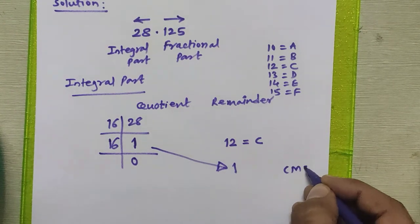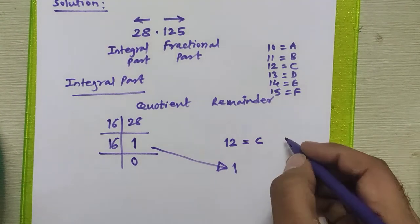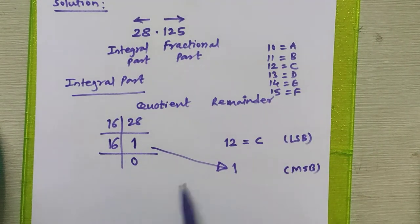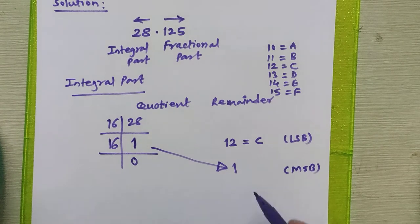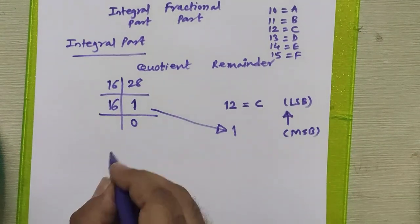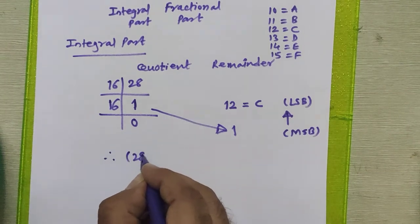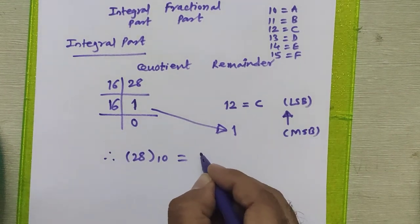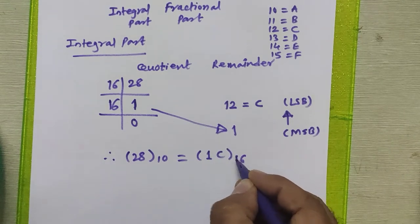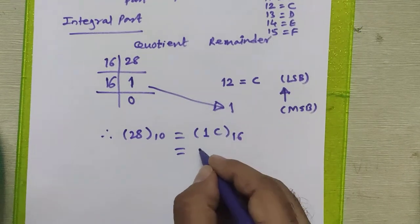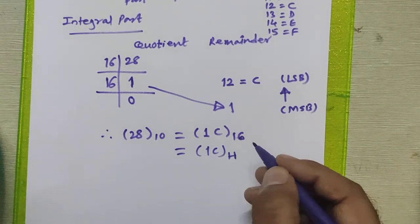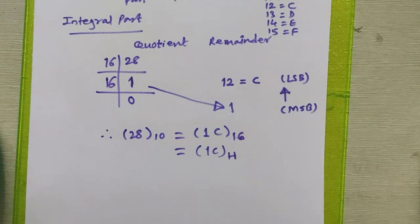This is our MSB (most significant bit), whereas this is LSB bit. To get the hexadecimal equivalent for 28, we arrange this data from MSB to LSB. Therefore, 28 decimal equals 1C in hexadecimal, also written as 1C to the base 16 or capital H.